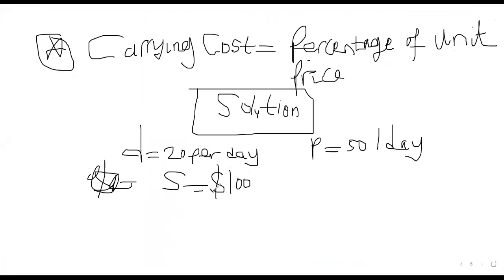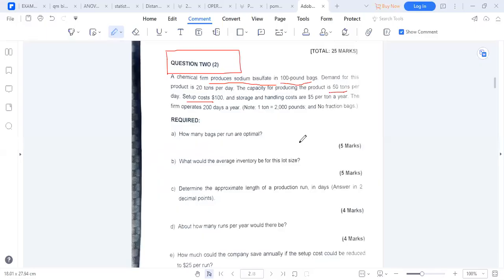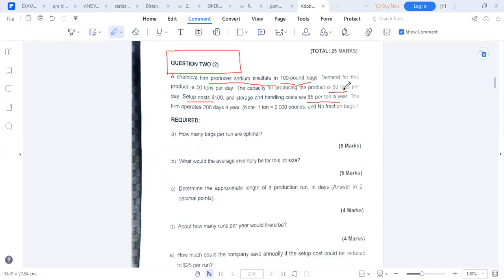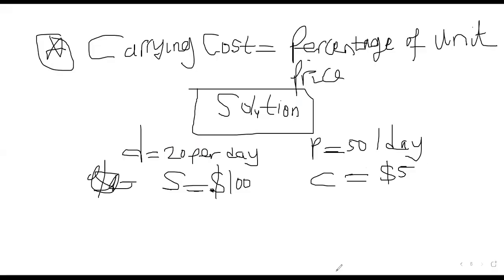The other information given: storage and handling cost is $5 per ton per year, so carrying cost C equals $5. The company operates 200 days a year — so days of the year equals 200.